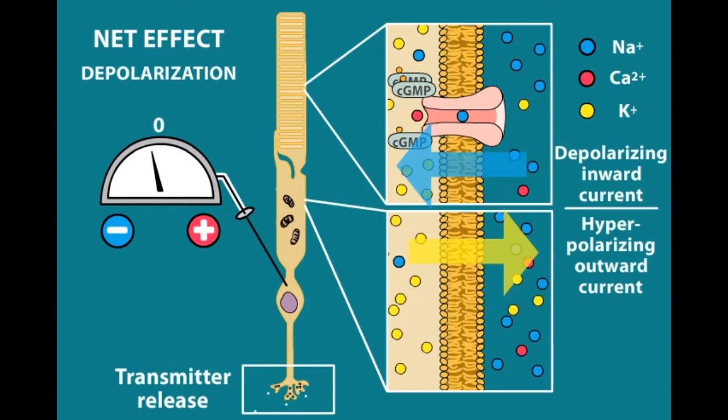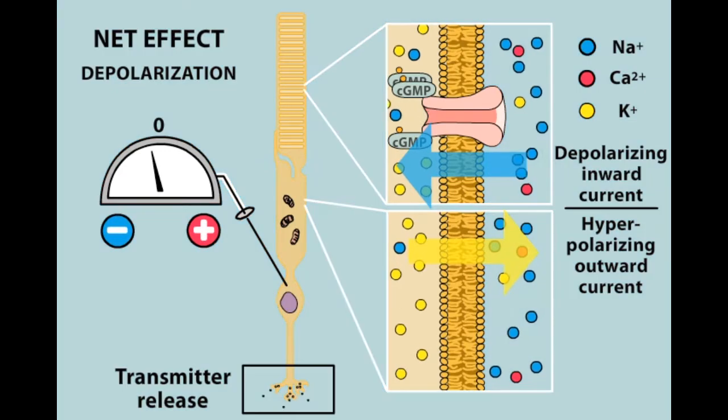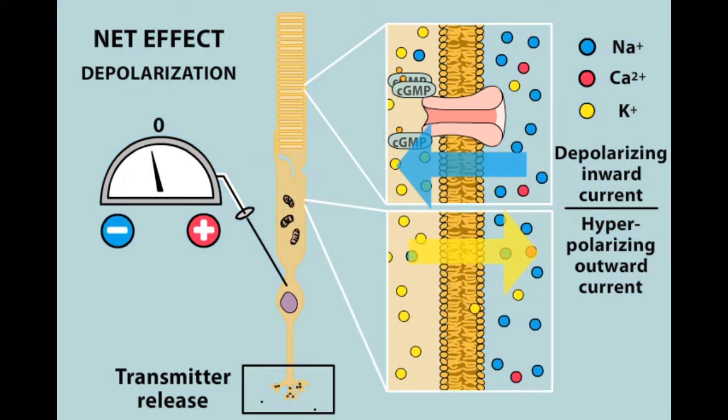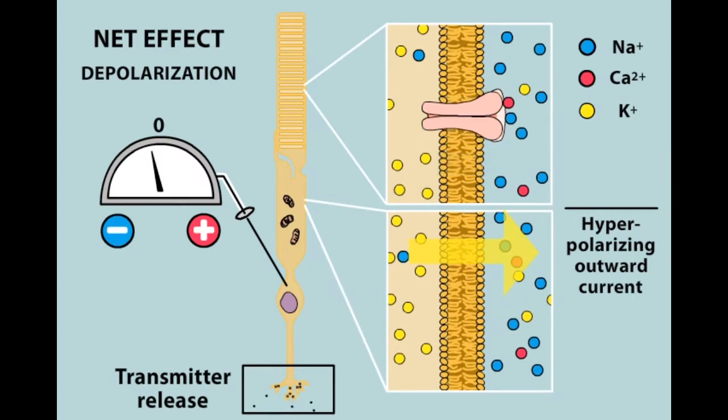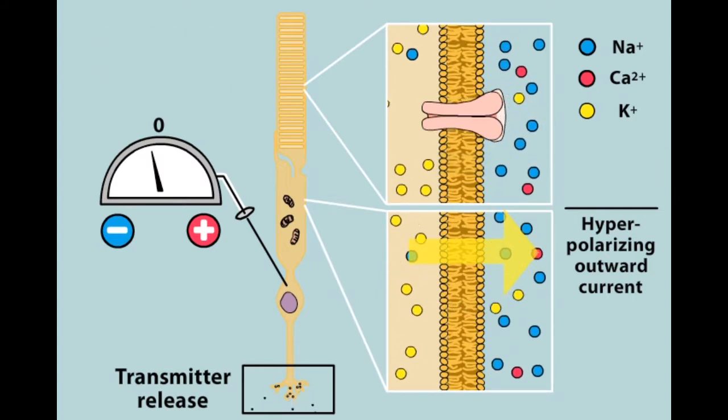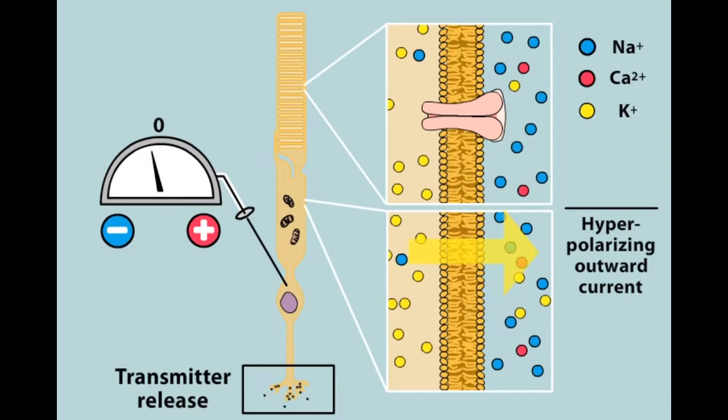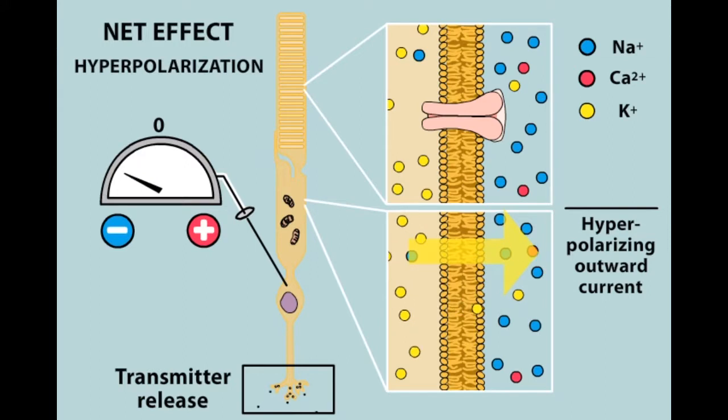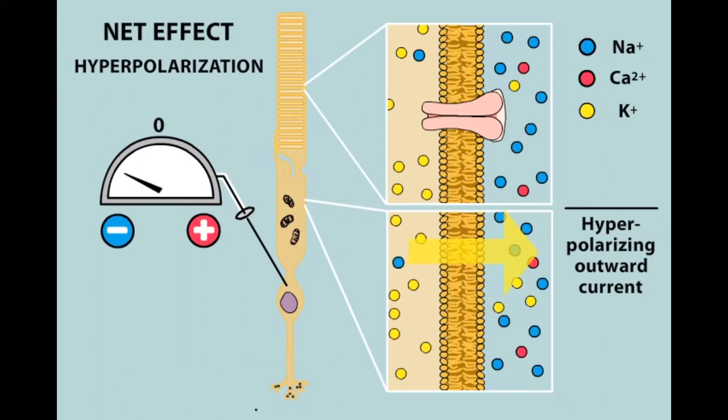Absorption of light reduces the concentration of cyclic GMP in the outer segment, leading to the closure of the cyclic GMP-gated channels. As a result, positive charge carried by potassium ions flows out of the cell more rapidly than positive charge carried by sodium and calcium ions flows in. The cell becomes hyperpolarized, that is, more negative, and decreases its release of transmitter.